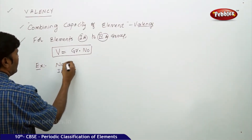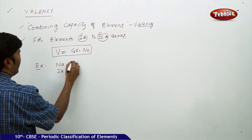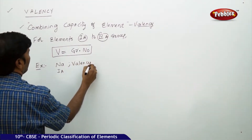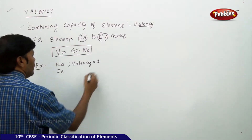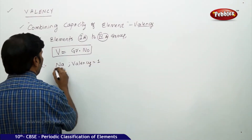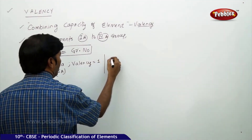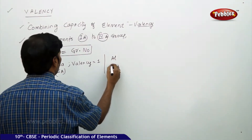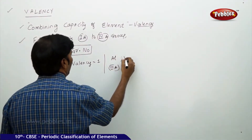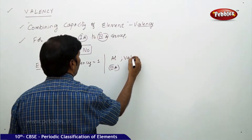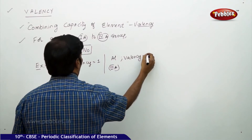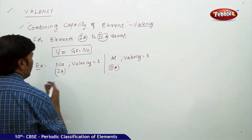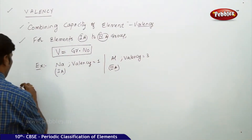For example, sodium belongs to group 1A, so its valency is equal to 1. For magnesium and aluminium, aluminium belongs to group 3A, so its valency is equal to 3. Group number equals valency.